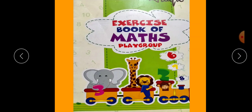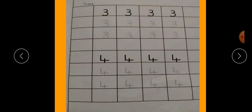Open your exercise book of Maths now. You need to trace number 3 and number 4 on the dotted lines in your book.